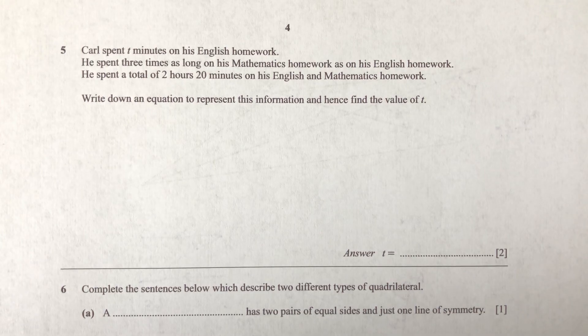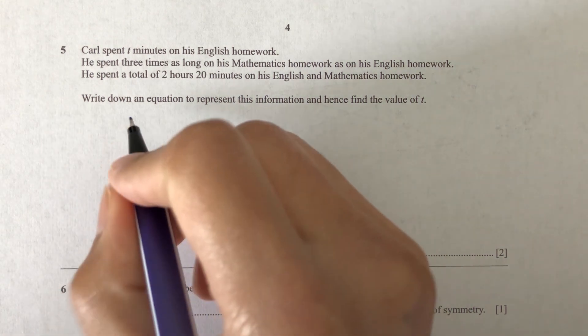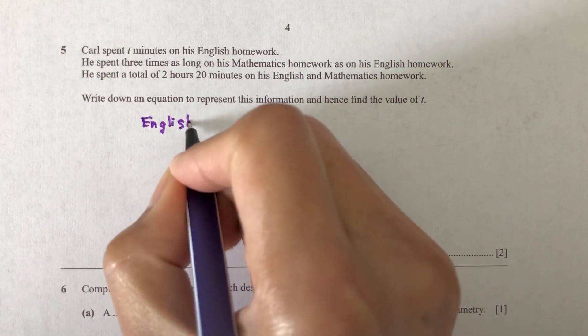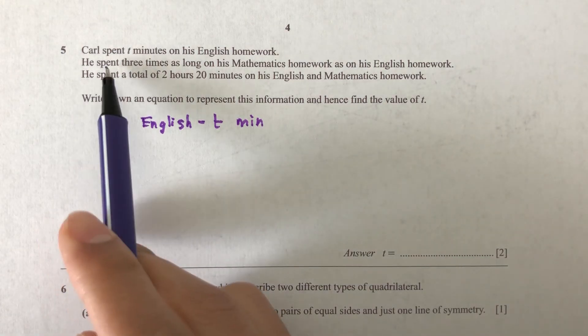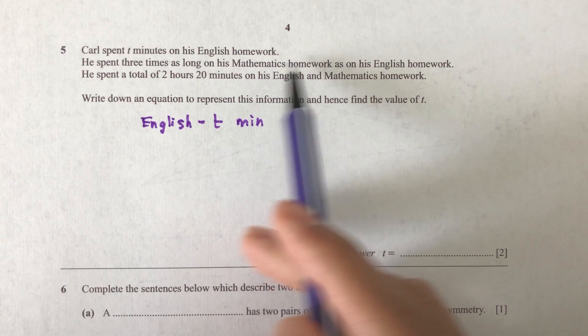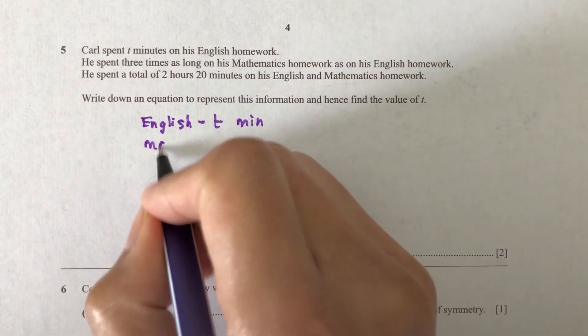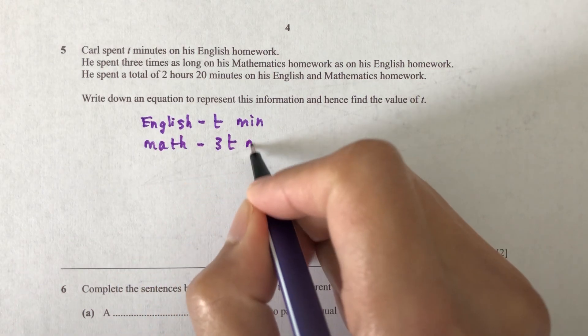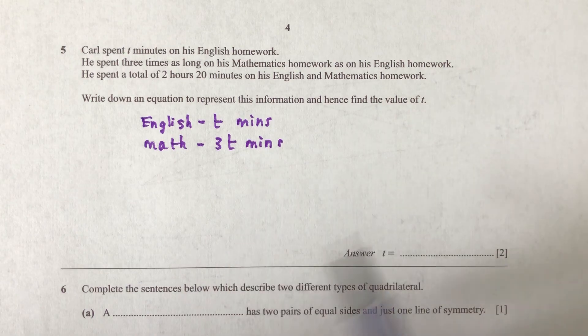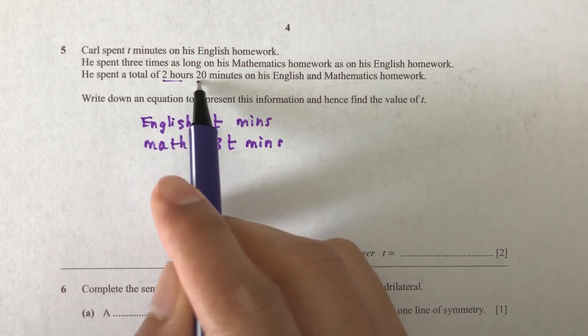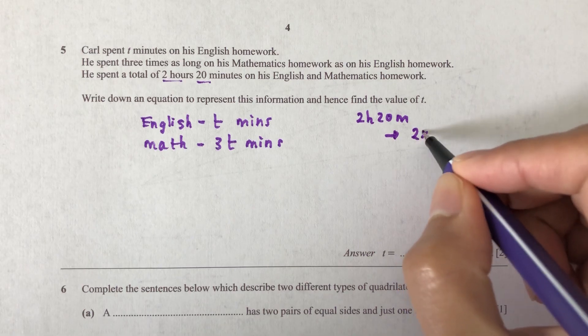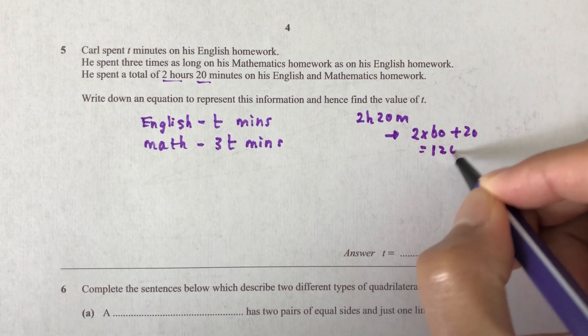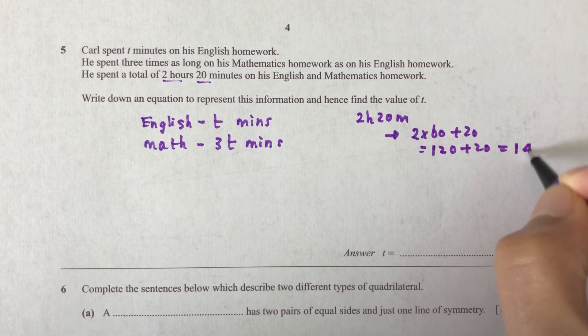Question number five. We have Carl spent 10 minutes on his English homework. That's the first information that we have. So English homework, he spent 10 minutes. And then we have he spent 3 times as long on his math homework as on his English homework. So math, he spent 3 times as much. So 3T minutes. So now we are given that he spent a total of 2 hours and 20 minutes. So what is 2 hours and 20 minutes in minutes? So 2 hours is 2 times 60 minutes plus 20. That will be 120 plus 20. That will be 140 minutes in total he spent.